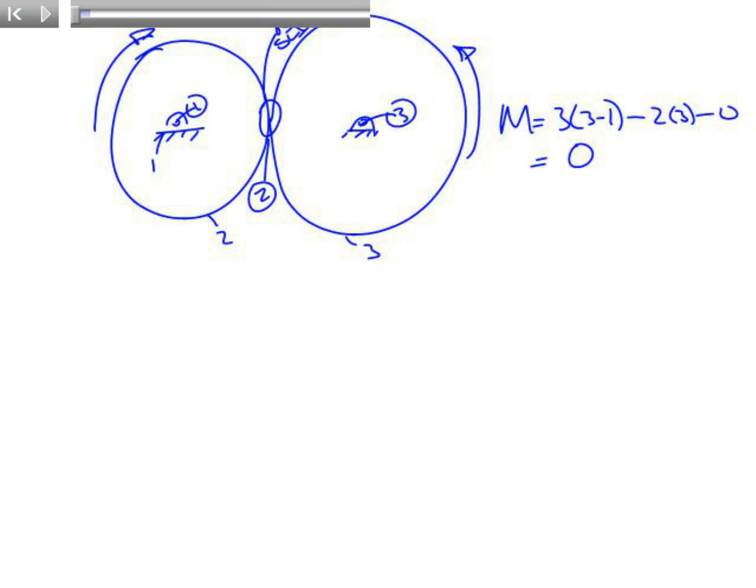Be on the lookout for systems in which there are parallel links, or systems in which there are rolling members. We cannot suspend our knowledge when using Grubler's equation. We must look at the mechanism critically before we accept whatever value for mobility Grubler gives us.